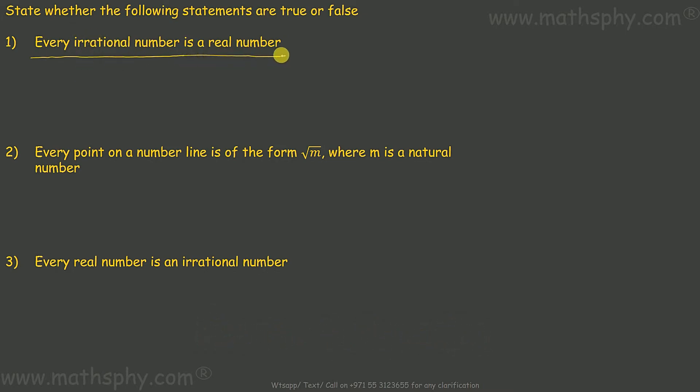All the rational will be a real number, and as per definition, real numbers include all the rational and irrational, all sorts of numbers. It means every rational number is a real number.